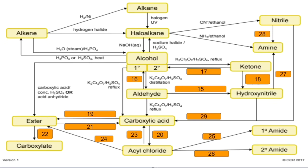Number fifteen: aldehyde to hydroxynitrile — sodium cyanide and aqueous acid. Number sixteen: aldehyde to primary alcohol — we're going to reduce this with sodium borohydride, NaBH4. Number seventeen: another reduction reaction — ketone to secondary alcohol, same reducing agent NaBH4.